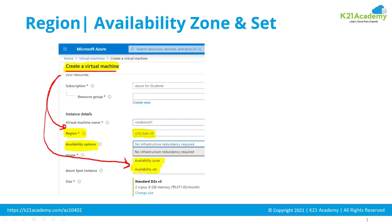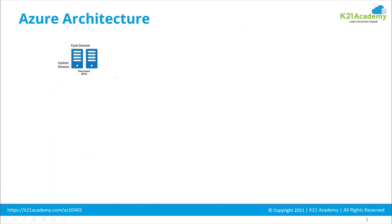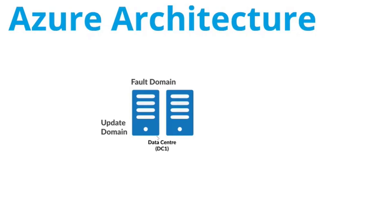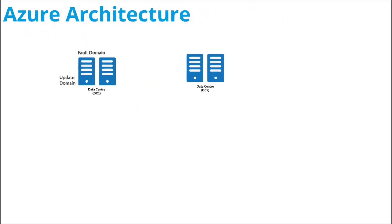When you select two machines in the same availability set, Microsoft will automatically place these two machines, which are part of the same availability set, into two different fault domains within a data center. This protects you so that if one fault domain or one rack of servers goes down, your second virtual machine will still be running from the second fault domain. So placing two virtual machines in a single availability set protects you against a problem in a server rack within the data center, meaning machines are within a single data center.